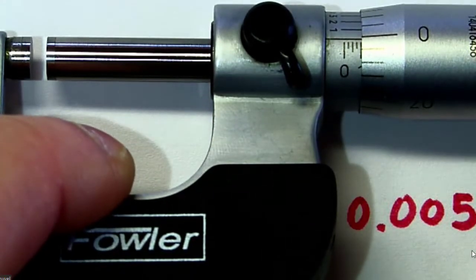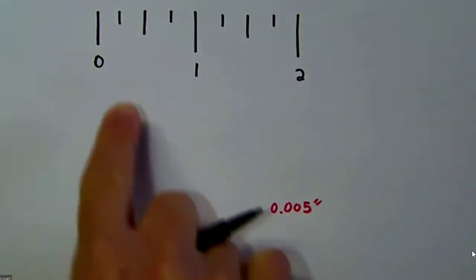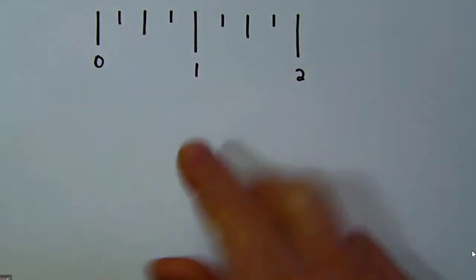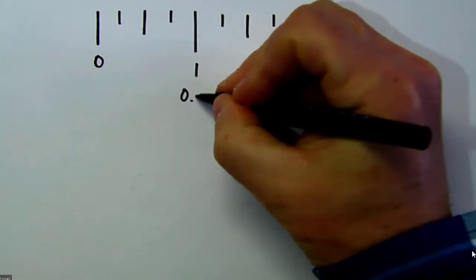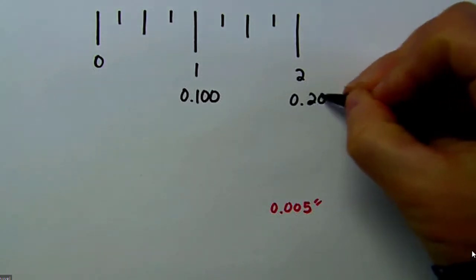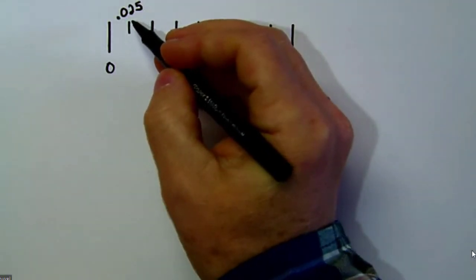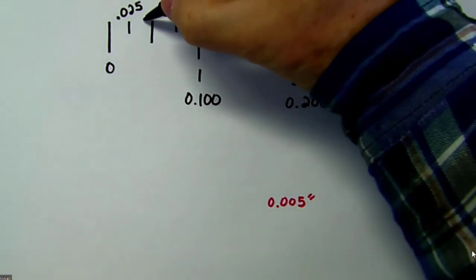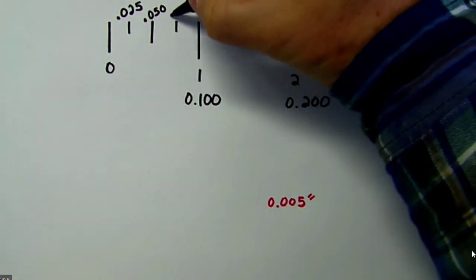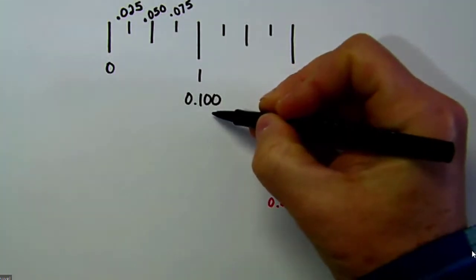So what that means is, when you're looking at that scale on the sleeve, the inside of the micrometer, that one is actually .100, and this two is 0.200, and so on. And each one of these tick marks is .025 added on, so we have .025, the second one is .050, and the third one is .075, and then we hit .100.